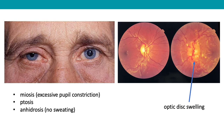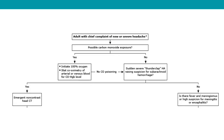Looking at the algorithm governing the management of acute headache: first, if a patient presents with a new or severe headache, ensure there is no possibility this is carbon monoxide poisoning — relatively rare in the UK outside of a house fire. If suspected, initiate 100% oxygen and perform co-oximetry of carboxyhemoglobin levels via venous blood gas. The next critical step is to identify if there was a sudden thunderclap headache raising suspicion for subarachnoid hemorrhage. If yes, proceed to an emergent non-contrast CT.